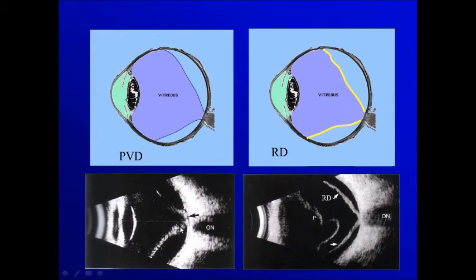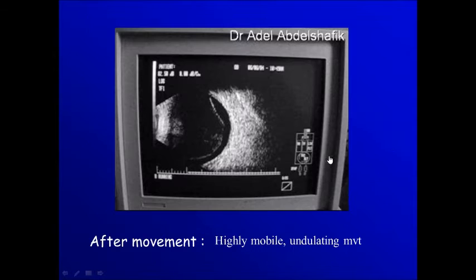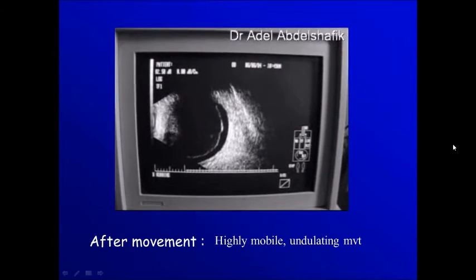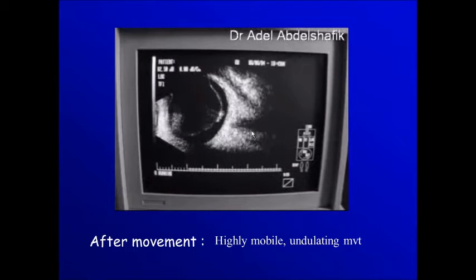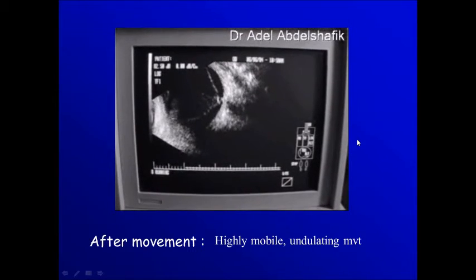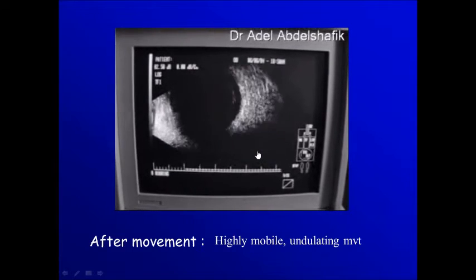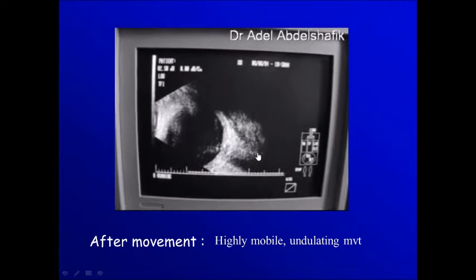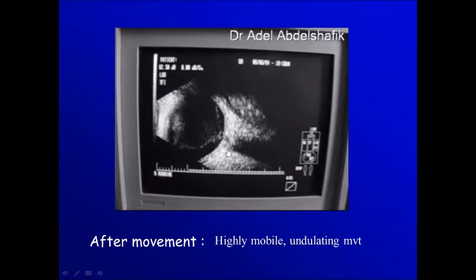You notice here the difference between this membrane — it seems eccentrically attached — and this membrane attached to the center. Sometimes we can see on the posterior vitreous detachment condensations representing the Weiss ring. Here we get the optic nerve, this is a muscle, and we have a membrane here in the vitreous cavity. You can see this membrane is still attached to the disc but only at an eccentric location.